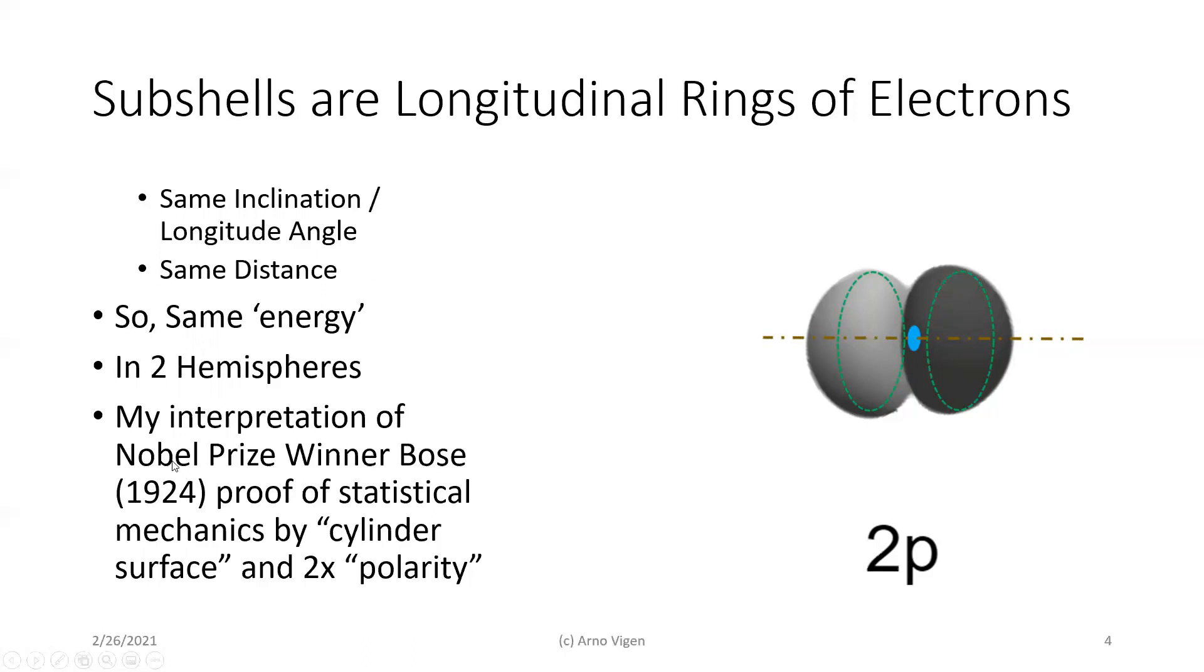Now, this is my interpretation of the Nobel Prize winner, Bose, in his 1924 proof of statistical mechanics. Specifically, he called for a cylinder surface, electrons not coming together, but having something pulling them towards that and then bouncing off of each other as they are around this ring, creating these electron distributions. And two times for polarity in his paper, which again, I think is the hemisphere logic.